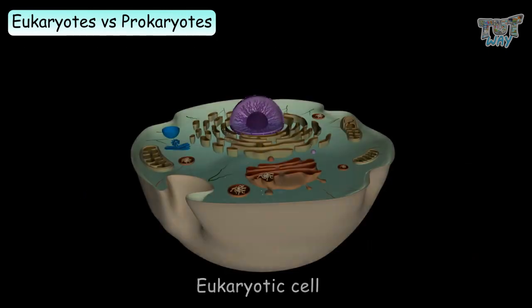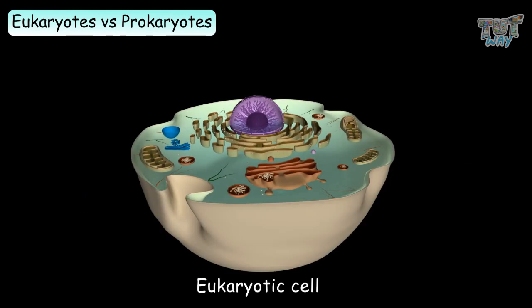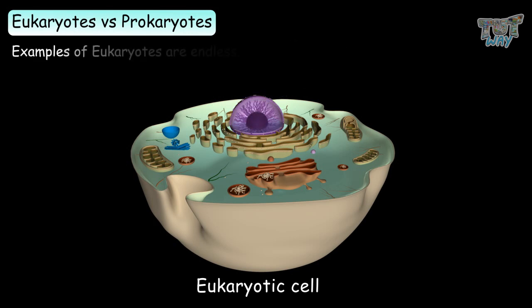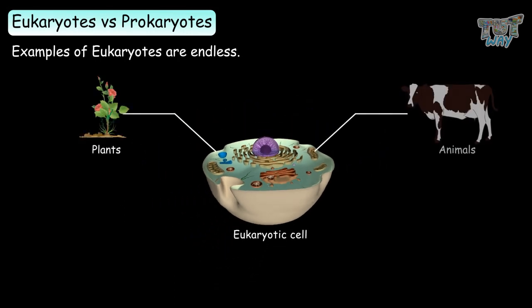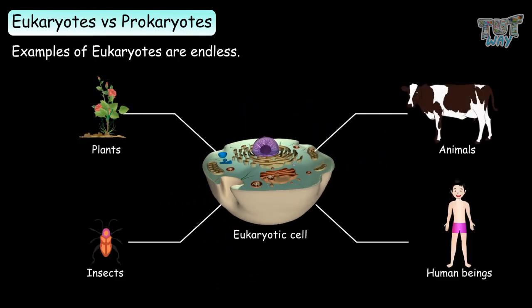Eukaryotic cells have a well-defined membrane-bound nucleus. Examples of eukaryotes are endless — all plants, animals, insects, and even you yourself are made up of eukaryotic cells, so we are all eukaryotes.